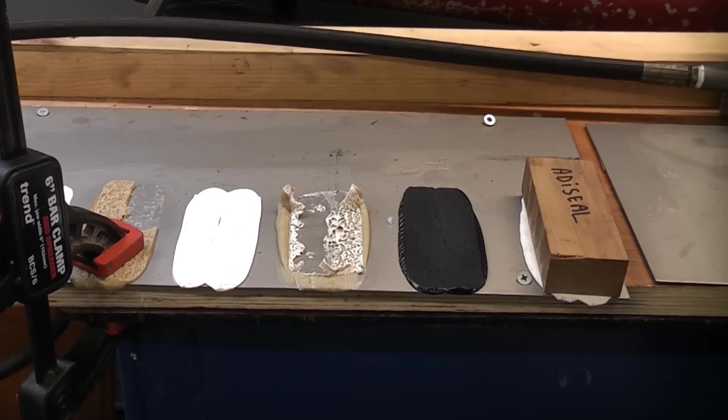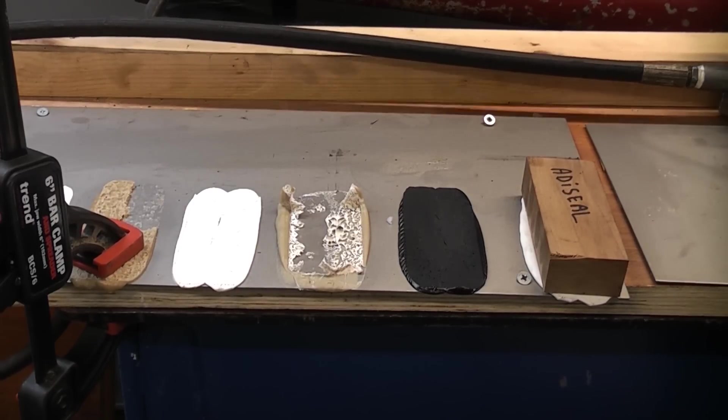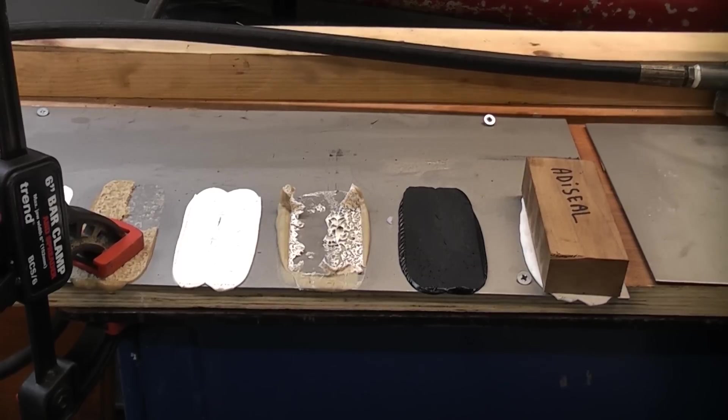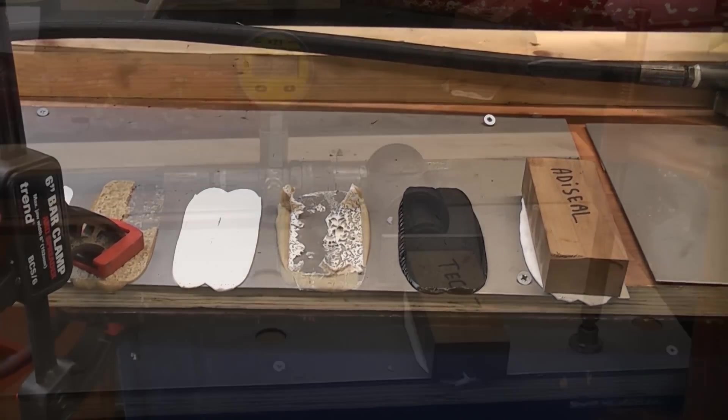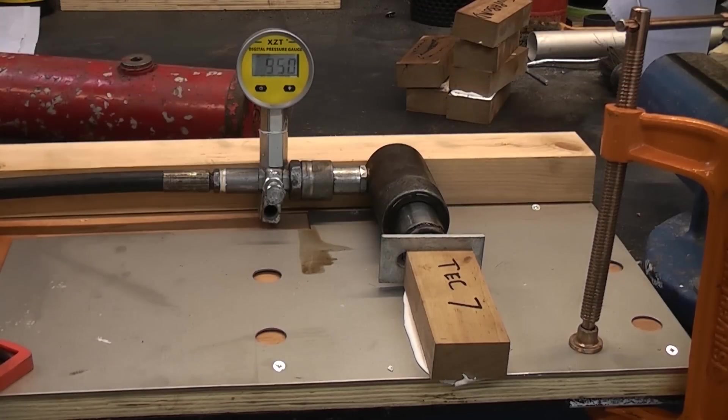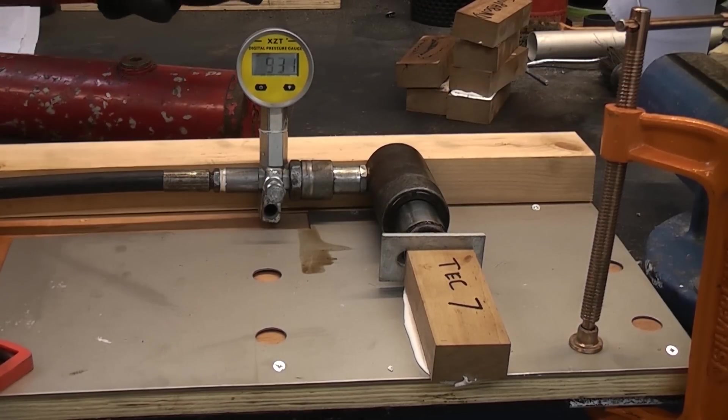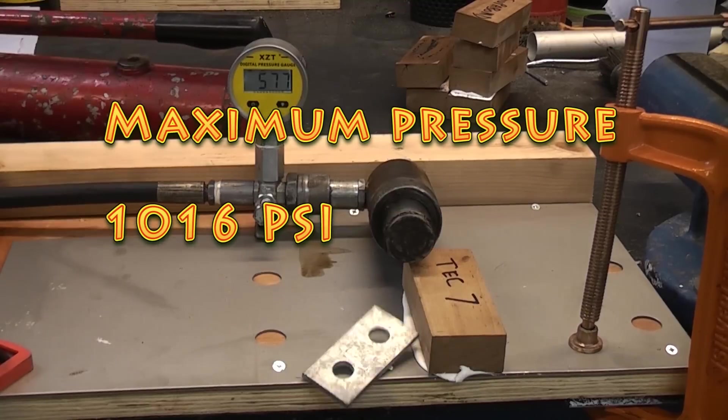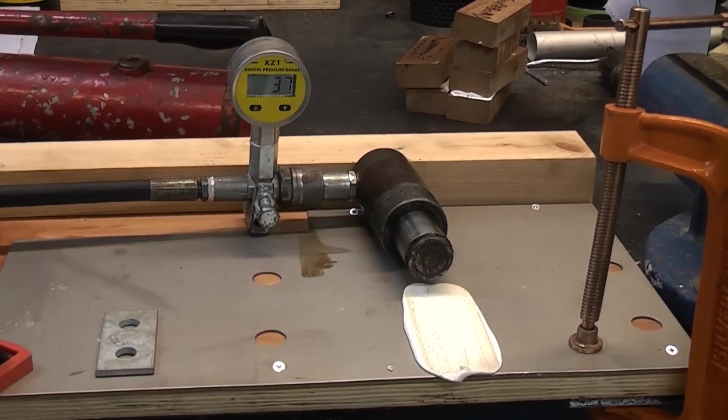I'm now going to test out the final one which is Tech 7. Hopefully the hydraulics will hold up enough just to do that because it does look like the seals are now passing in the cylinder. So there we have that test. I think the clear winner there was definitely Adi-Seal.